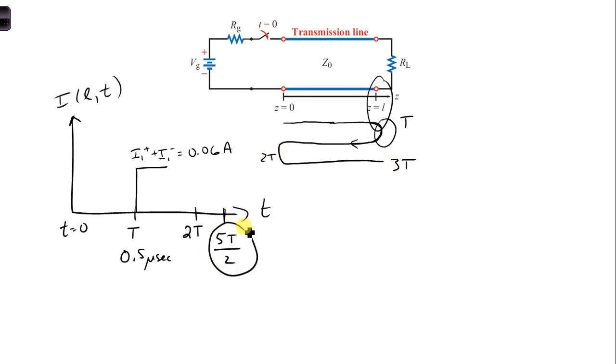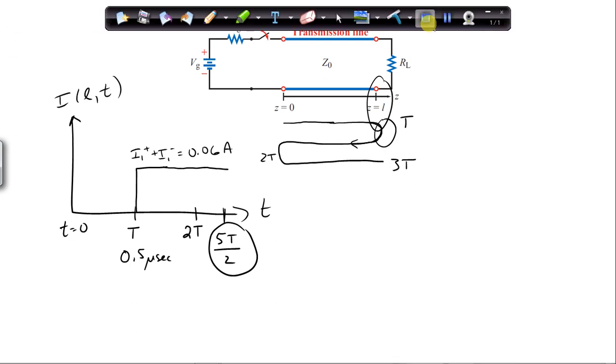So over the time span of 2.5T, we're not going to see anything else change with the current at the load. So I'm just going to have this be constant until we get to 5 capital T over 2.